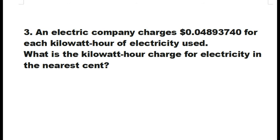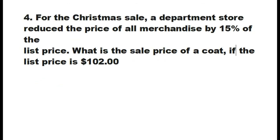Next, an electric company charges $0.04893374 per kilowatt hour of electricity use. What is the kilowatt hour charge for electricity to the nearest cent? So, rounded it to $0.05, because the digit next to 4 is 8, so 4 will be rounded up to 5.